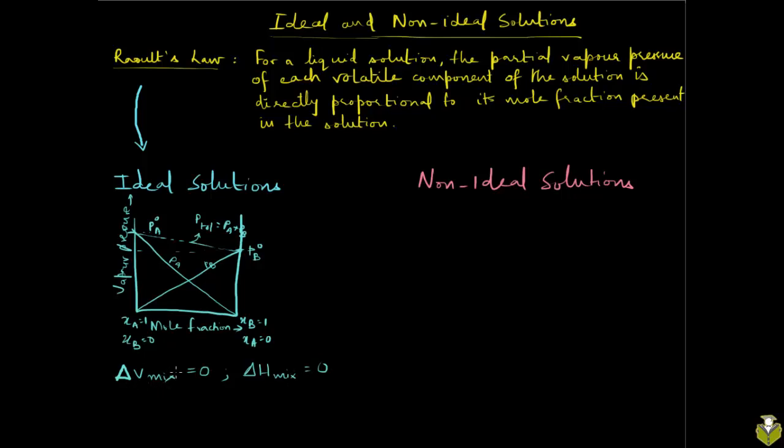Let's think about delta V mix. If you had liquid A and liquid B, let's say each of these is one liter in volume, when you add these two together, you get two liters of the solution. There is no change in volume when you mix these.